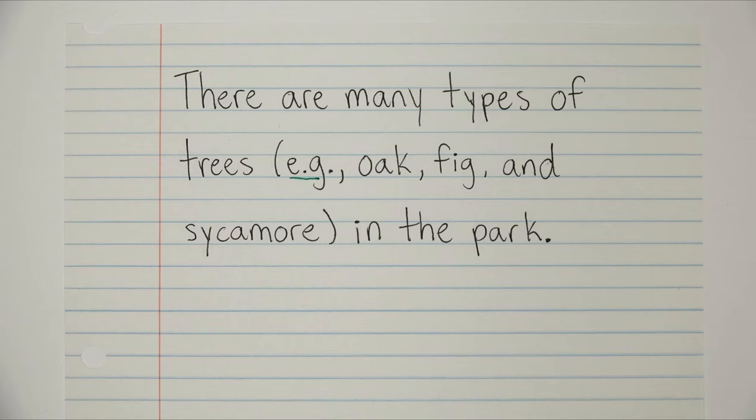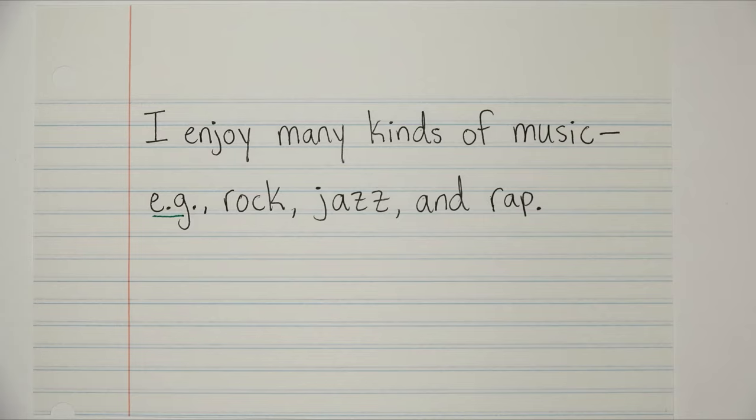Or how about this? I enjoy many kinds of music, e.g., rock, jazz, and rap. So again, we use e.g. just like for example, which means we're throwing in that comma after it. And then, of course, we list our examples.